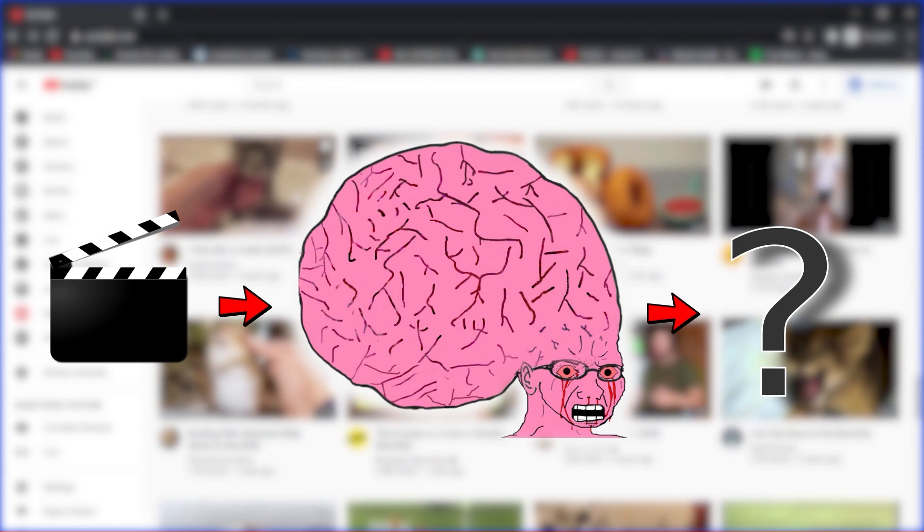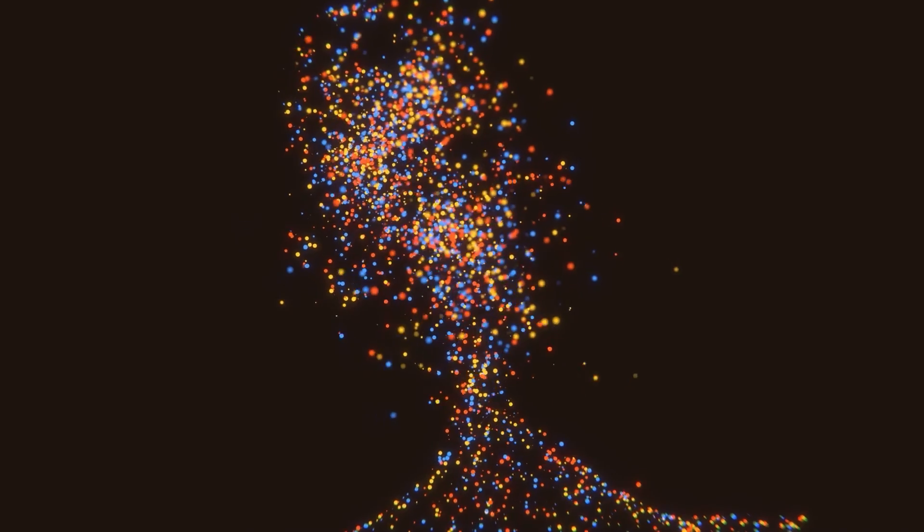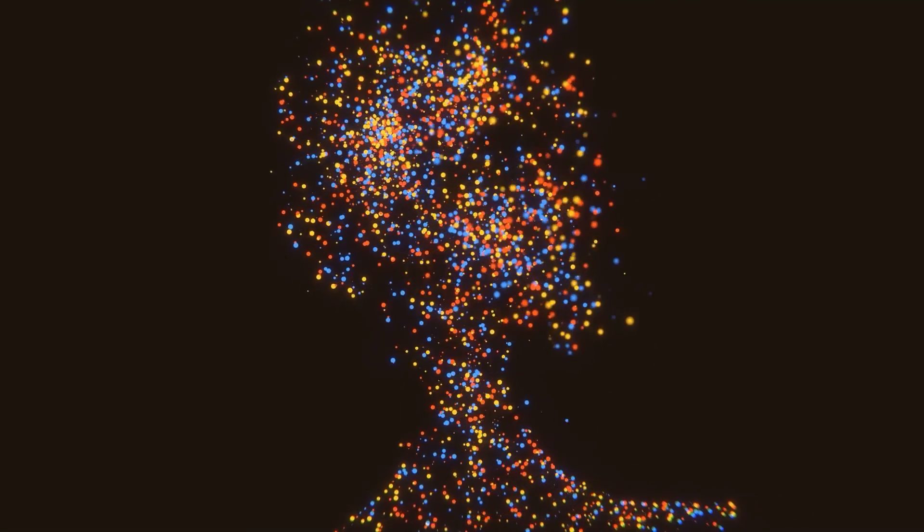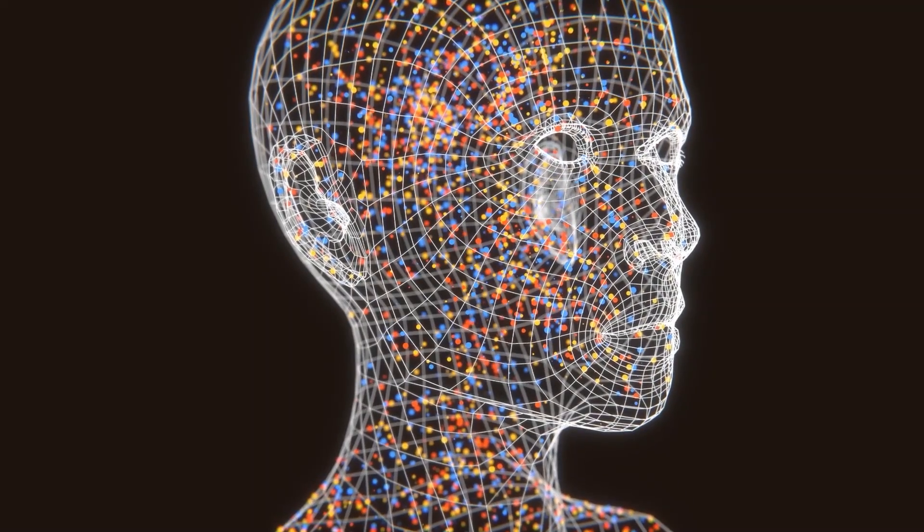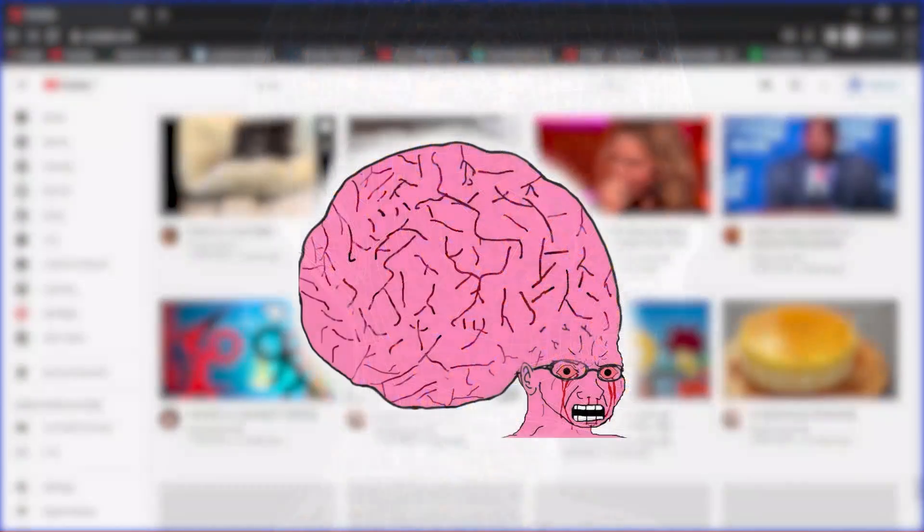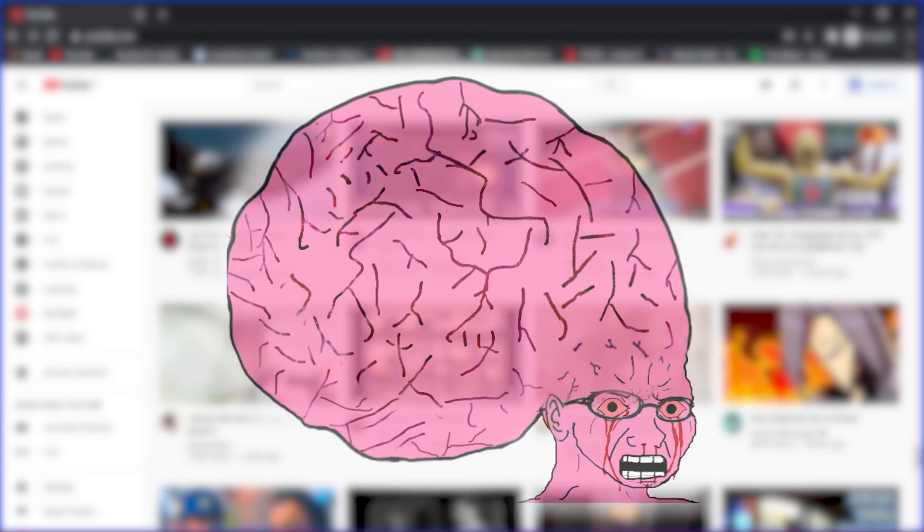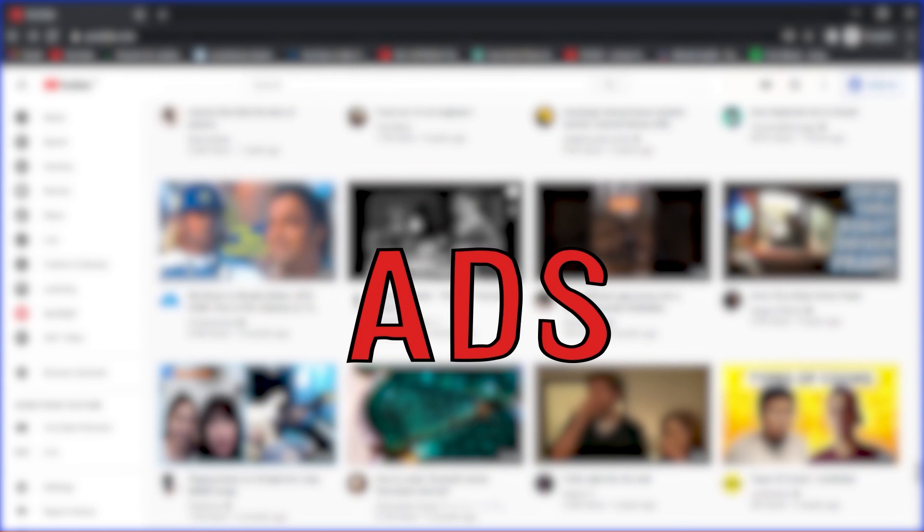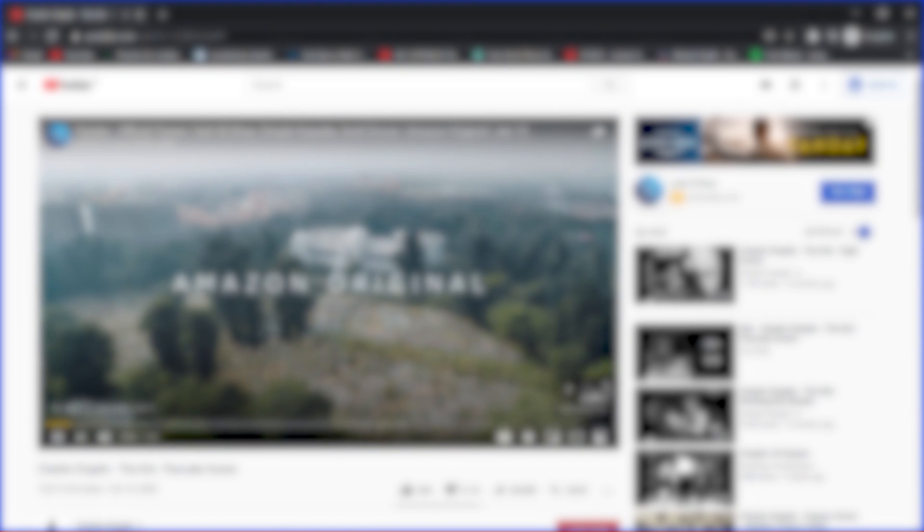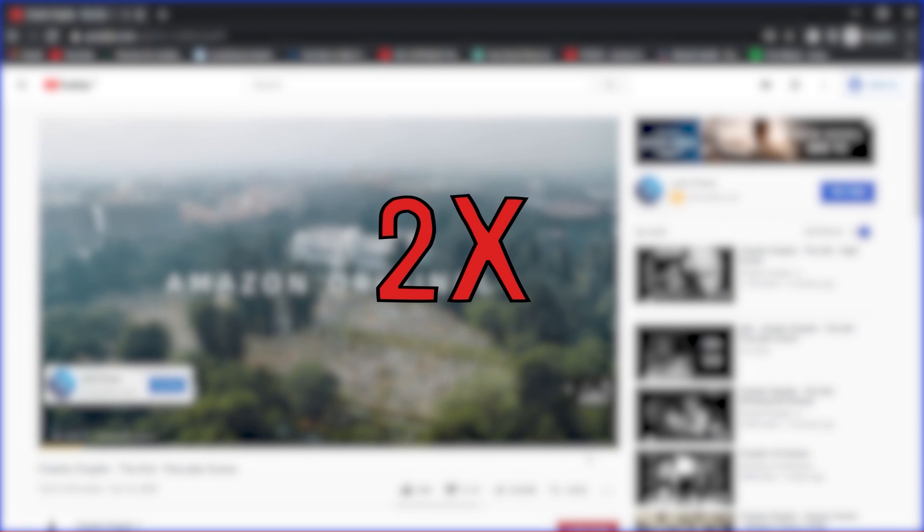And using all that, it created a digital model of you inside its system, with which it tries to analyze what kind of videos you are more likely to watch and binge on, what kind of videos are more likely to keep you engaged, make you spend more and more time on the platform so that it can make you watch more ads. And it seems like it's working. The average time that people spend watching online videos has doubled in the last four years. The algorithm seems to be winning.